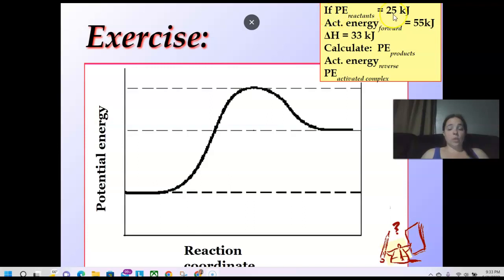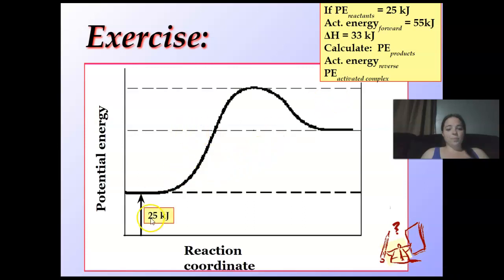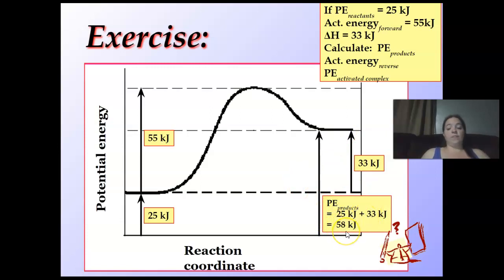If the PE of the reactants is 25, so PE of my reactants right here is 25, my activation of the forward all the way up is 55, my delta H is 33, what is my PE of the products? Potential energy of my products is right from here to here. Well, if this is 25, my PE, what's up here, this is 25, this is 33, 25 minus 33 is 12. I believe that might be, add 12 more, that should go up to 30. There's 25, there's 55, there's 33, so 25 and 33 is 58. Sorry, that's my bad. I can't calculate without looking at it.